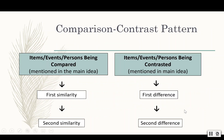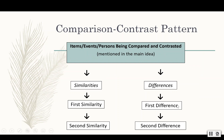Here's what those paragraphs could look like. The main idea is going to be the events, items, or people being compared, and then it's going to list the similarities. Same with contrast — whatever it is that you're contrasting is going to be part of that main idea, and then it's going to show the first difference and the second difference. You might have a paragraph that does both — showing similarities and differences. Let's take a look at an example.